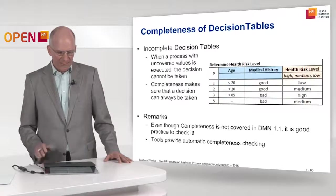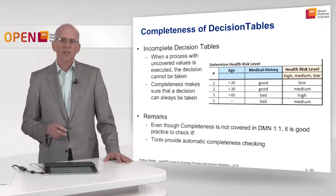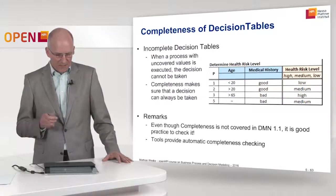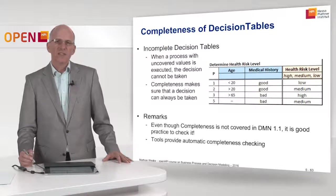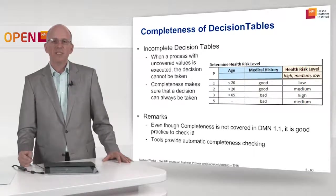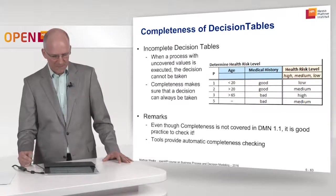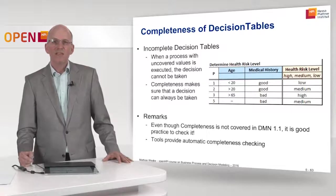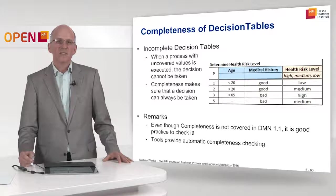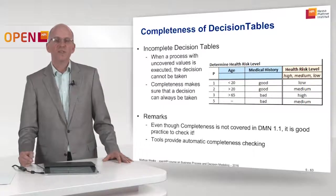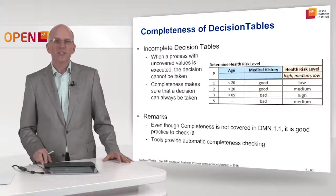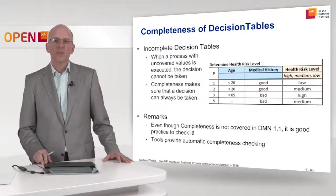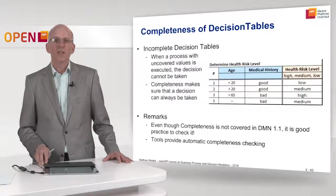To summarize completeness: incomplete decision tables are really a problem. When a process with an uncovered input value is executed, the decision simply cannot be taken. Completeness makes sure that a decision can always be taken, so your decision tables should be complete. Even though completeness is no longer explicitly covered in the new DMN standard, it is very good practice to check for it. Tools like the Signavio system provide automatic completeness checking and will point you to any problems in your decision table.